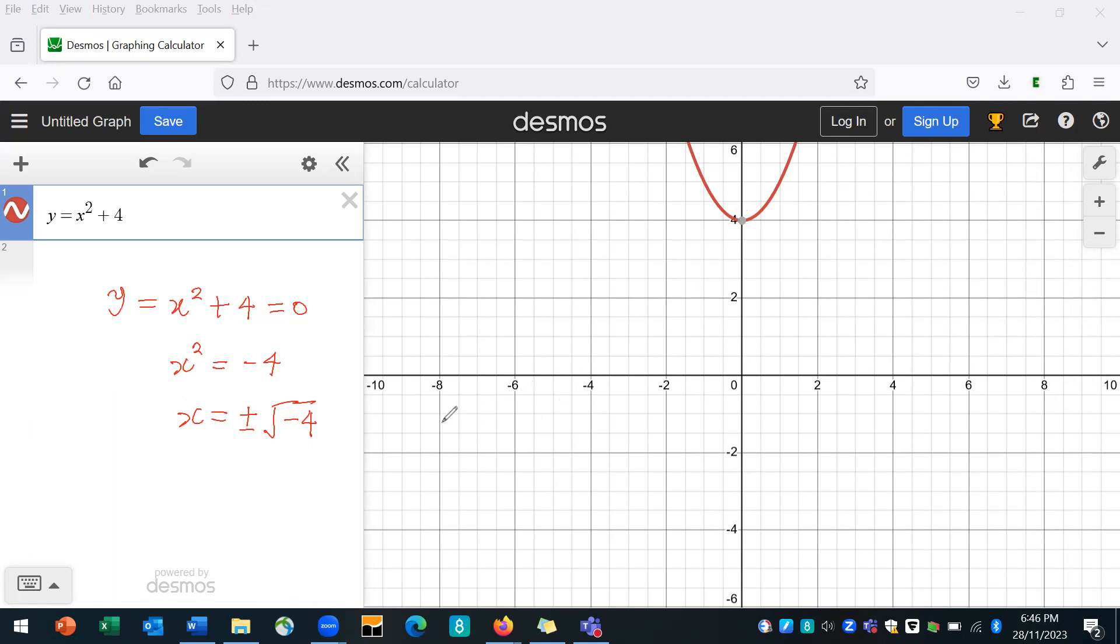So that's why it's not touching the x-axis. If you remember the use of your discriminant, you can also check whether a quadratic function has a real root by calculating the discriminant and see whether the discriminant is positive or negative.